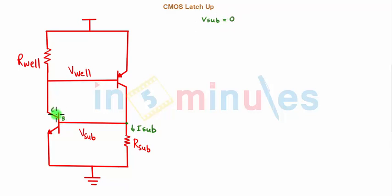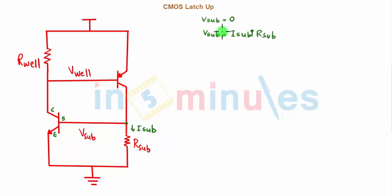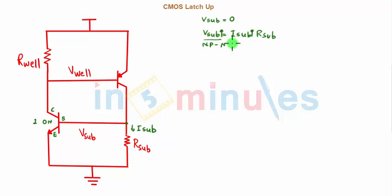This is the base, collector, and emitter of the NPN transistor. Now because I_sub has started flowing, we know that V_sub = I_sub × R_sub. As I_sub increases, V_sub increases, which will eventually turn the NPN transistor on. The NPN transistor turns on because at its base a positive value is being applied as V_sub has increased. This leads to a collector current — let's call it I_well — which will start flowing.